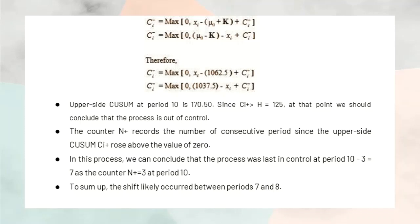Since this is the first period at which C i positive is greater than H which is 125, at this point we should conclude that the process is out of control.